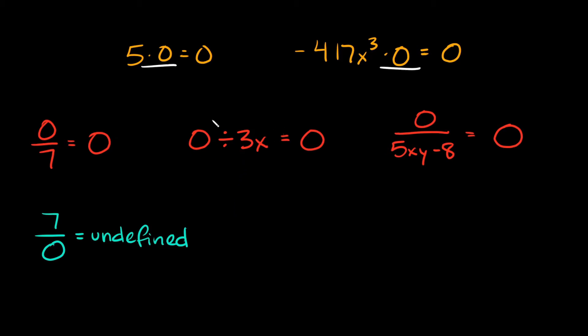Likewise if we flip these numbers, so if I instead had 3x divided by zero, again I can't divide by zero, so your answer would again be undefined. And I'm going to abbreviate that as undef - undefined.